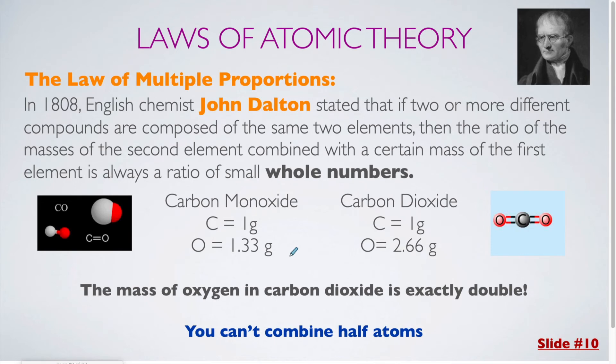So let's say that we have these two compounds that contain the same exact elements. So carbon monoxide and carbon dioxide both only contain carbon and oxygen. If I had carbon monoxide, which had exactly one gram of carbon, and I had carbon dioxide, which also contained exactly one gram of carbon, the amount of oxygen that that one gram of carbon would bond to would be 1.33 grams or 2.66 grams. And it's very clear that this is exactly twice as much. This essentially tells us that we can't combine half atoms or fractions of atoms. I needed exactly twice as much mass because I have exactly twice as many atoms which are bonding to that carbon.